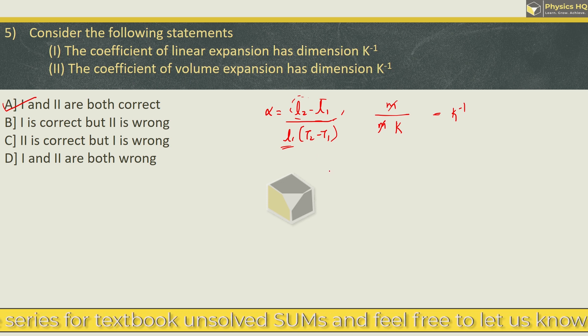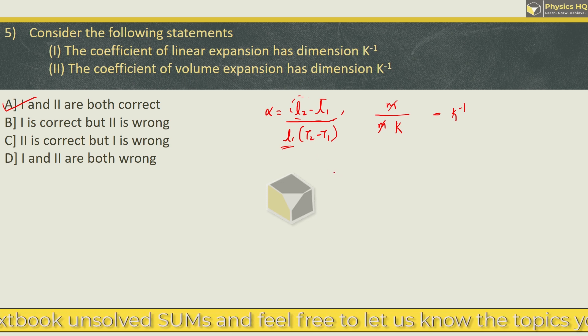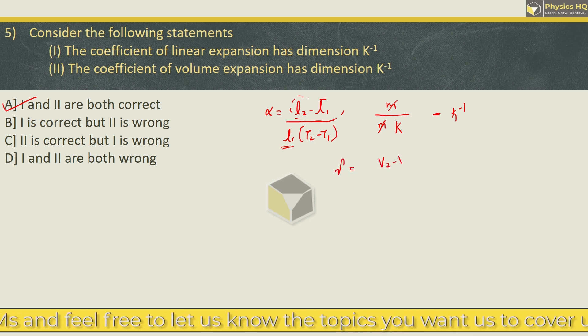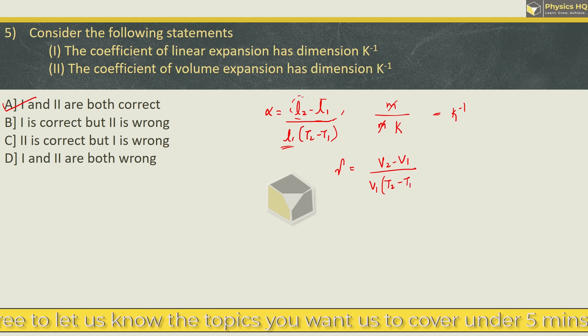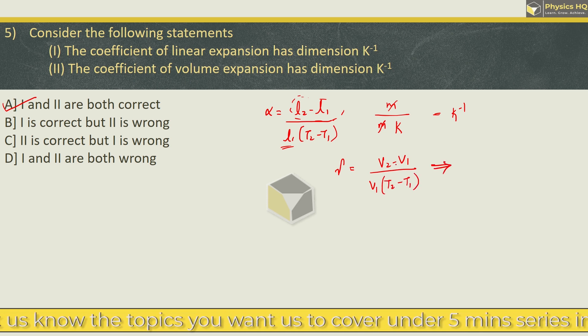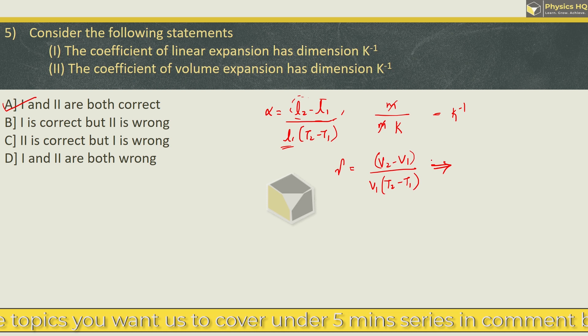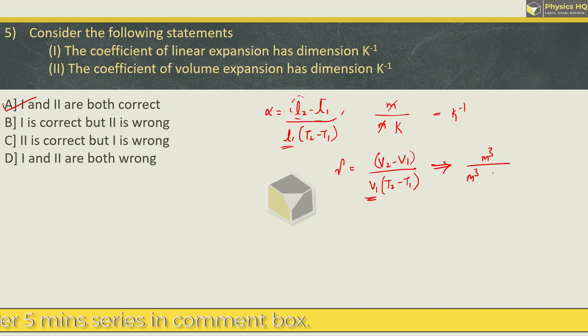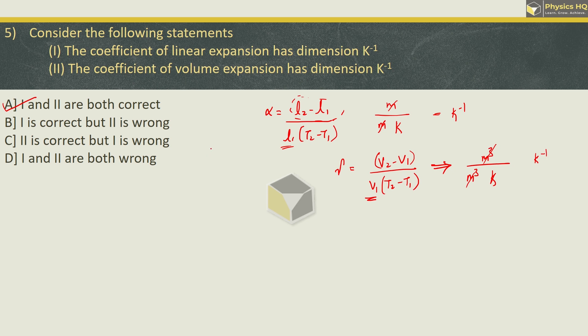Likewise, for the volume expansion coefficient γ, γ is given by (V₂ - V₁)/(V₁ × (T₂ - T₁)). If we write down the units, numerator has volume difference unit as meter cube, denominator has V₁ unit as meter cube and temperature difference unit as Kelvin. Once again meter cube cancel and we will be left with Kelvin inverse. Both are correct, even for β the coefficient for aerial expansion has the same dimension.